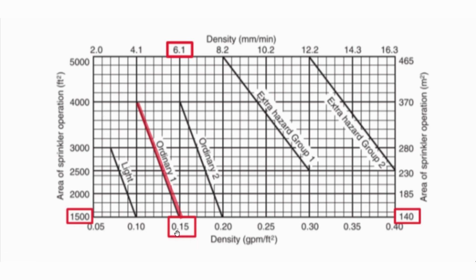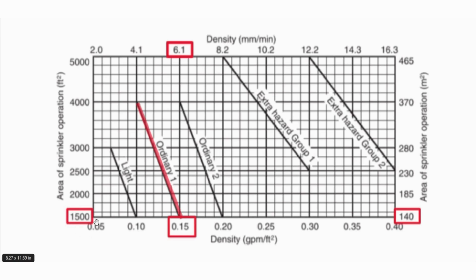According to the area-density curve for ordinary hazard group 1, the prescribed density is 0.15 gpm per square foot while the corresponding design area of sprinkler operation is 1500 square feet. This means we require a sprinkler system capable of delivering 0.15 gallons per minute for every square foot, covering an area of 1500 square feet.